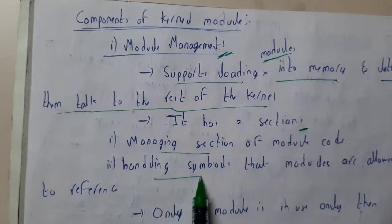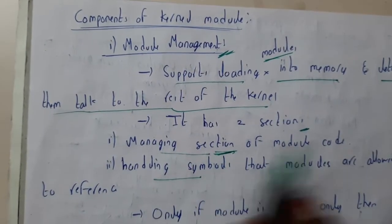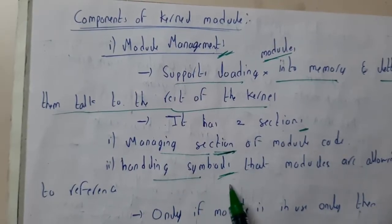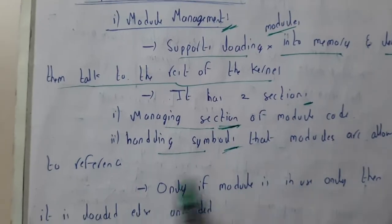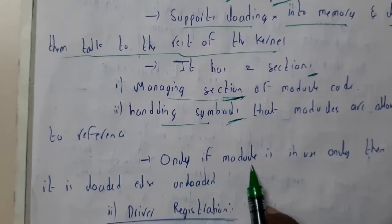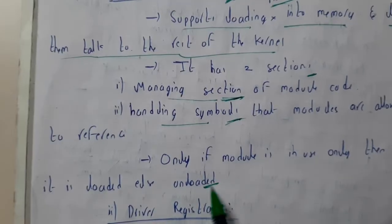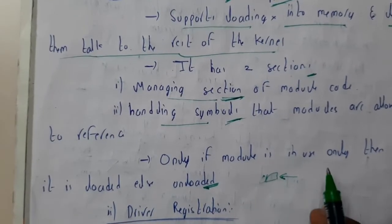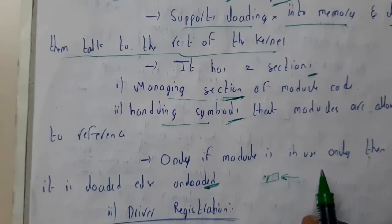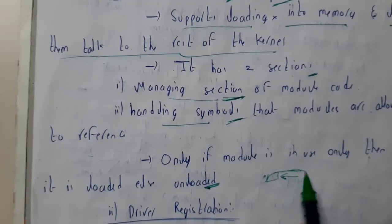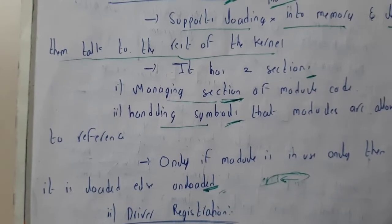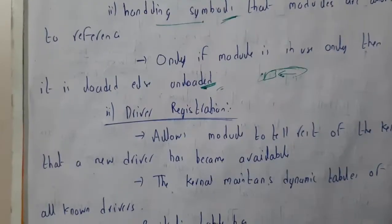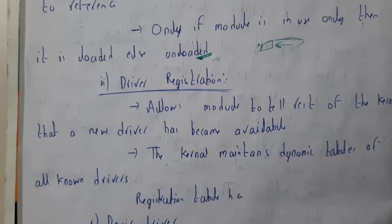In the management session, whenever a process comes in it manages everything. In handling symbols, when there are special symbols it handles them. A module is loaded only if it is in use. If a module comes into use it is pushed into the kernel, but if some other process is no longer using it, it will be automatically unloaded from the kernel. This is how efficient usage of the kernel is managed by the module manager.